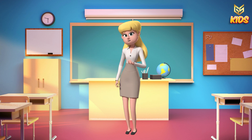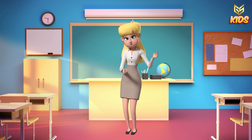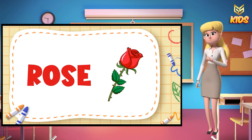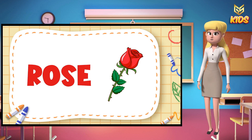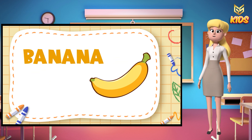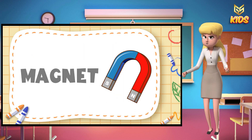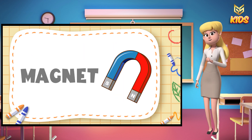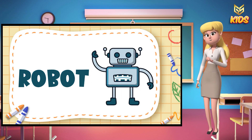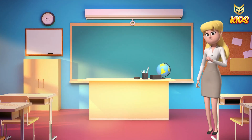So children, before wrapping up, let's repeat all the names again so that you can understand and identify all the objects. This is a fan. This is a rose. This is a spoon. This is a pen. This is a banana. This is an aeroplane. This is a magnet. This is a rocket. This is a robot.